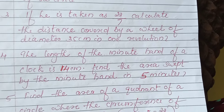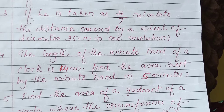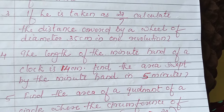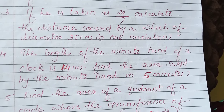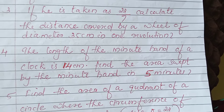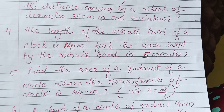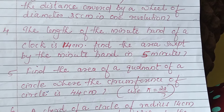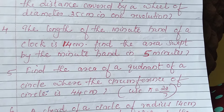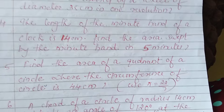Next question: the length of the minute hand of a clock is 14 cm. Find the area swept by the minute hand in 5 minutes. Next question: find the area of the quadrant of a circle where the circumference of the circle is 44 cm.